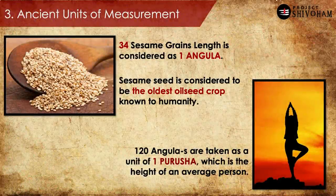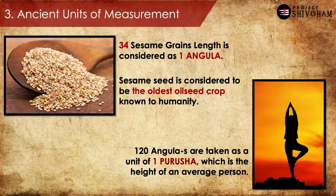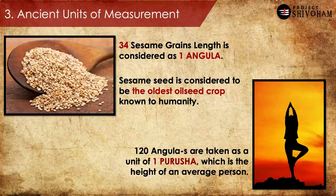The third most important thing about Sulbhasutras is the units of measure. What's geometry without a unit of measure? There are different units defined in different Sulbhasutras. One example: Angula — 34 sesame seeds stacked up face to face gives one basic unit of measurement called Angula. 120 such Angulas is considered the height of one human being at that time, called one Purusha. There are many other such units of measurement in Sulbhasutras.